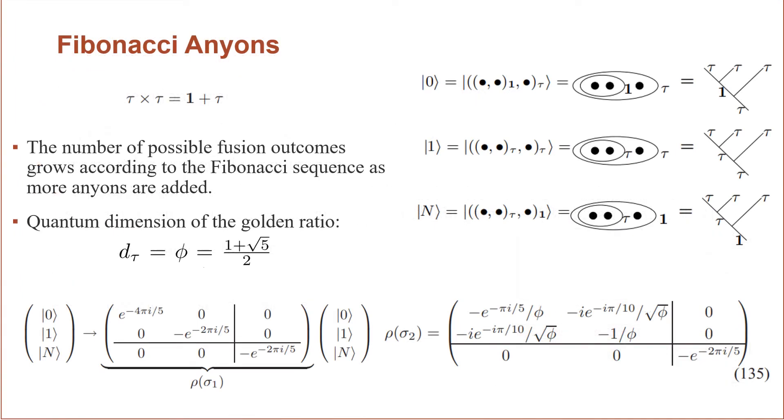So now we will go into the mechanics of the Fibonacci anyons. You can see in the top left the fusion relation between the two where the non-trivial state tau contrasted with the vacuum, which is represented as a one. Tau fused with tau has the possibility of being one or tau. And every other state fused with the vacuum is itself. The vacuum can be treated as the sort of trivial state.